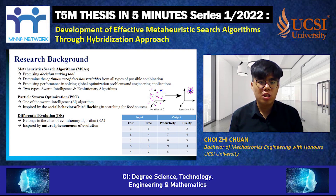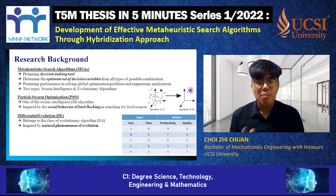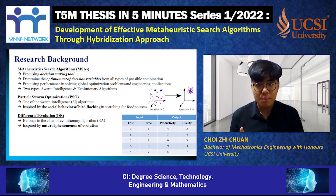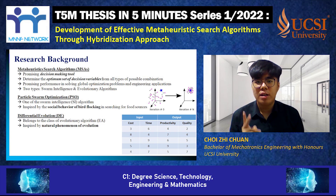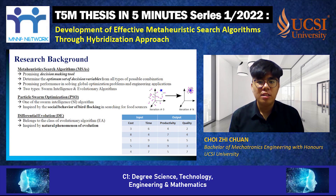What is Metaheuristic Algorithms? Metaheuristic Algorithms, known as MSA, is a promising decision-making tool to determine the optimum set of decision variables. MSA can be classified as two types, known as Swarm Intelligence, SI, and Evolutionary Algorithm, EA.